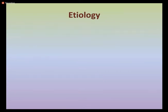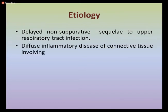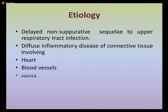Coming to the etiology of rheumatic fever: it is basically a delayed non-suppurative response to upper respiratory tract infection and results in a diffuse inflammatory disease of connective tissue involving different parts of the body. The main organs involved include the heart, blood vessels, joints, subcutaneous tissue, and central nervous system.